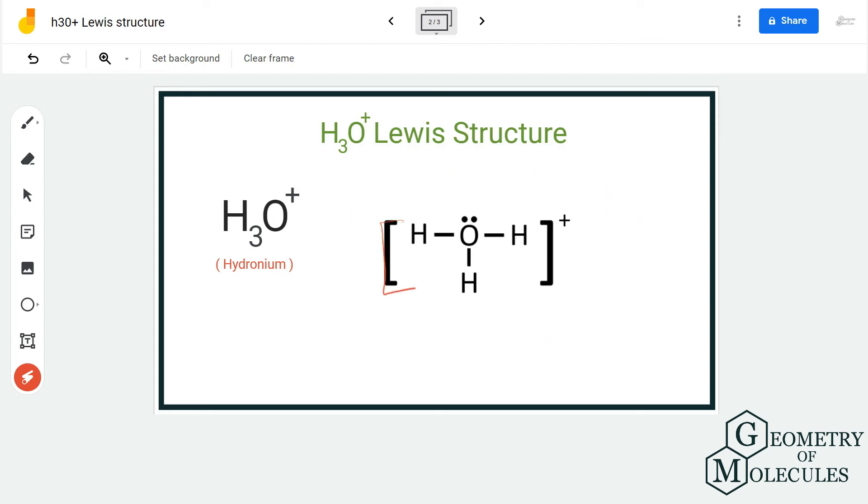We are going to put brackets around it and mention its charge. Whenever you write the Lewis structure for an ion, make sure to place brackets and mention its charge to show that it's an ion.